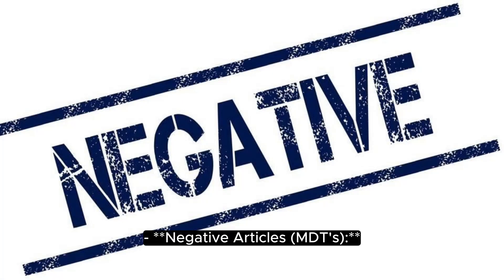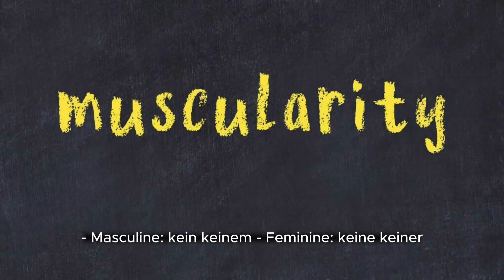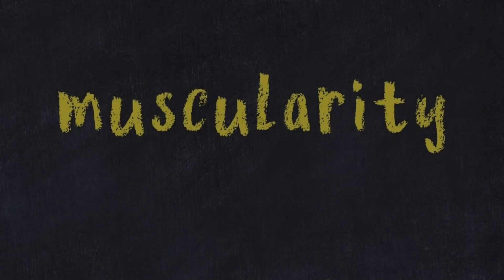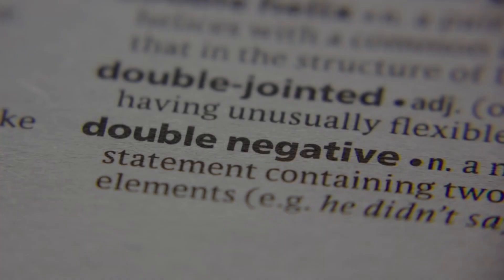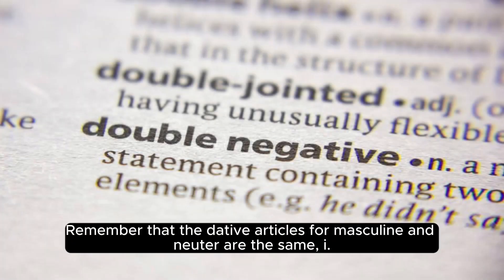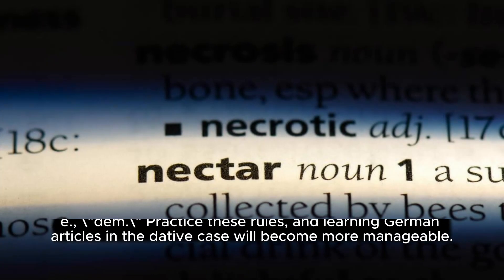For negative articles: masculine 'kein' becomes 'keinem,' feminine 'kein' becomes 'keiner,' neuter 'kein' becomes 'keinem,' and plural 'kein' becomes 'keinen' plus '-en' added to the noun. Remember that the dative articles for masculine and neuter are the same — i.e., 'dem.'